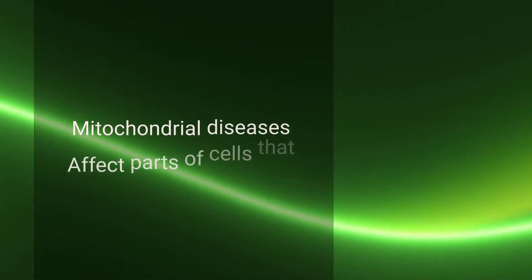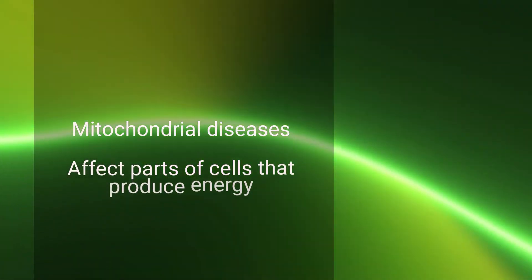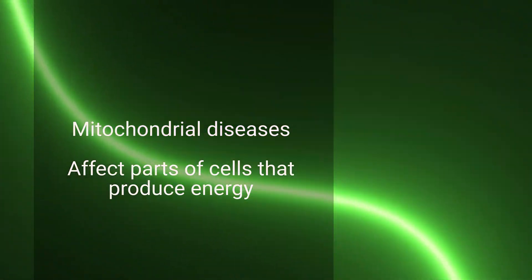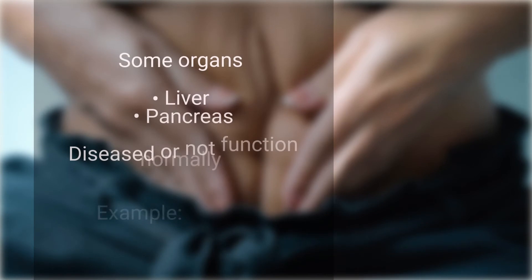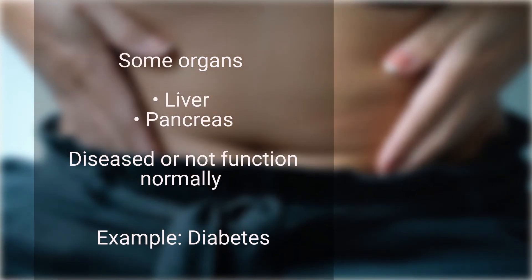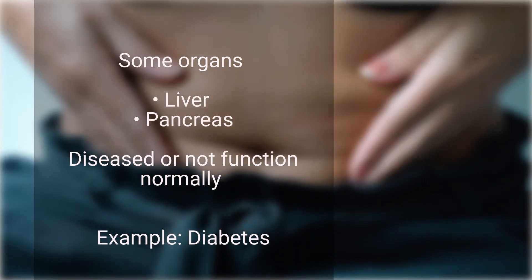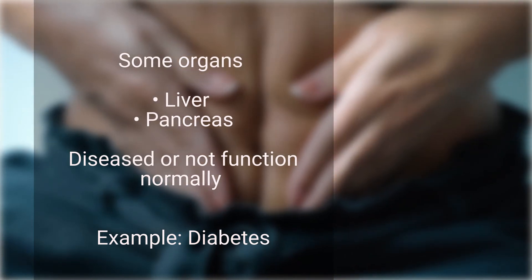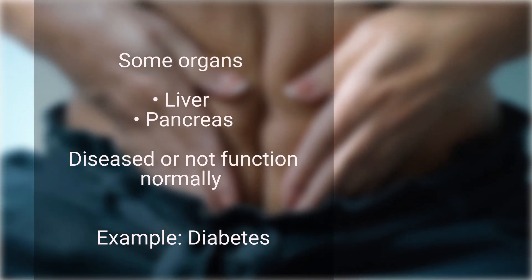Another group, mitochondrial diseases, affects the parts of the cells that produce energy. You can develop a metabolic disorder when some organs, such as your liver or pancreas, become diseased or do not function normally.